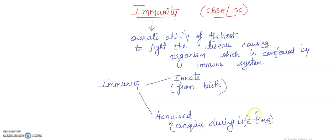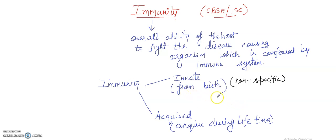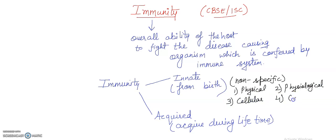Innate immunity is a non-specific type of defense that is present at the time of birth. It works by providing different types of barriers to the entry of foreign agents into our body. It consists of four types of barriers: physical barrier, physiological barrier, cellular barrier, and cytokine barrier.